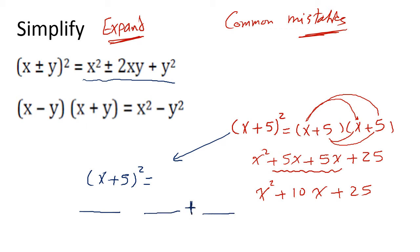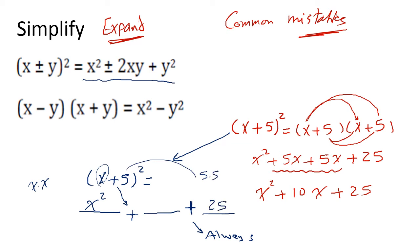The last sign is always positive. The middle sign follows the sign inside the bracket — if the bracket is positive, the sign is positive; if negative, it's negative. Then x multiplied by itself is x², 5 multiplied by itself is 25, and the middle term is 2 times the first term (x) times the second term (5), giving 10x.